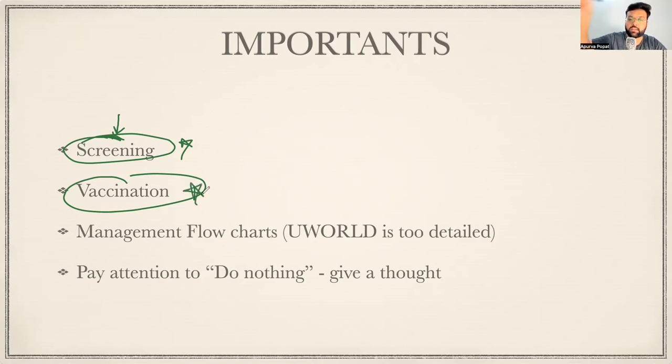If you look at the management of UWorld, UWorld management flowcharts are kind of very detailed. Don't dive into so much detail which UWorld teaches you about the full flowchart. For example, if somebody is having abdominal trauma and they ask you to do FAST scan, know the big picture of what the FAST scan showed. Know the big picture of the table rather than focusing on nuts and bolts. Don't focus so much on nuts and bolts that you forget looking at the ship. Look at the big picture of UWorld.